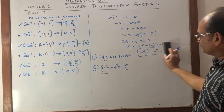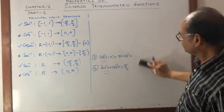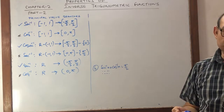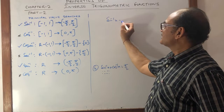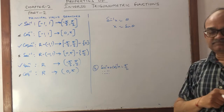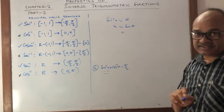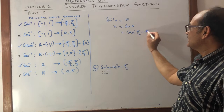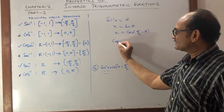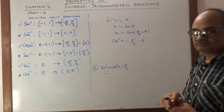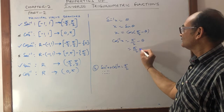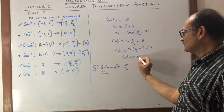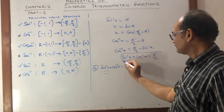Property 4: sin⁻¹(x) + cos⁻¹(x) = π/2. Suppose sin⁻¹(x) = θ, so x = sin θ. Using complementary angles, sin θ = cos(π/2 - θ), so cos⁻¹(x) = π/2 - θ. Substituting θ = sin⁻¹(x), the final result is sin⁻¹(x) + cos⁻¹(x) = π/2.